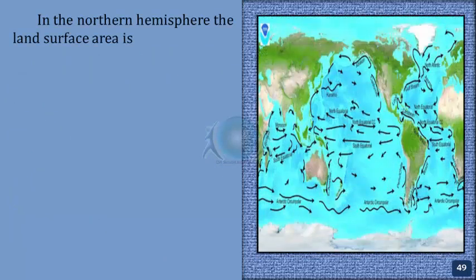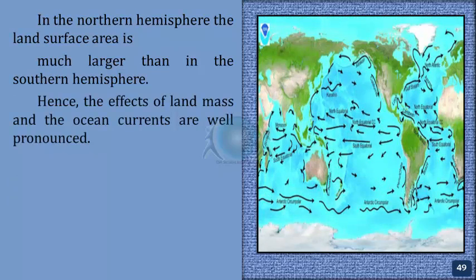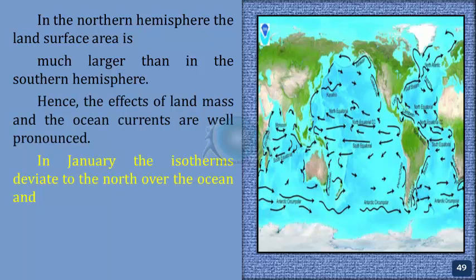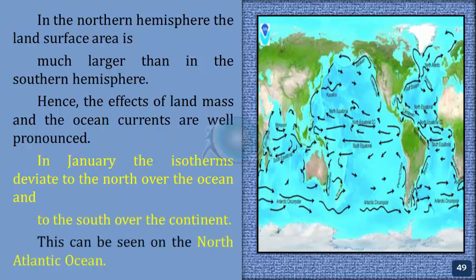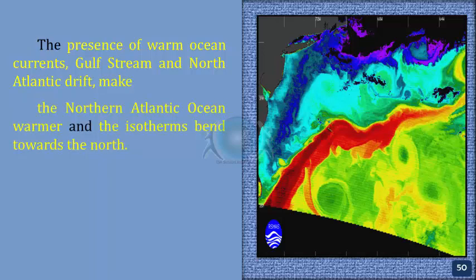In the northern hemisphere, the land surface area is much larger than in the southern hemisphere. Hence, the effects of land mass and ocean currents are well pronounced. In January, the isotherms deviate to the north over the ocean and to the south over the continent. This can be seen on the North Atlantic Ocean, where the presence of warm ocean currents — Gulf Stream and North Atlantic Drift — make the northern Atlantic Ocean warmer and the isotherms bend towards the north.